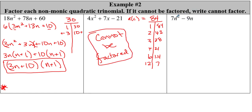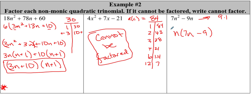And then this last one — we only have two terms. Where is our constant? We have a constant of 0. Do we need to do an AC method? 7 times 0 is 0. This looks like something from 9.1 — it's a quadratic, just not a quadratic trinomial. We simply factor out a GCF, so we get n(7n − 9).